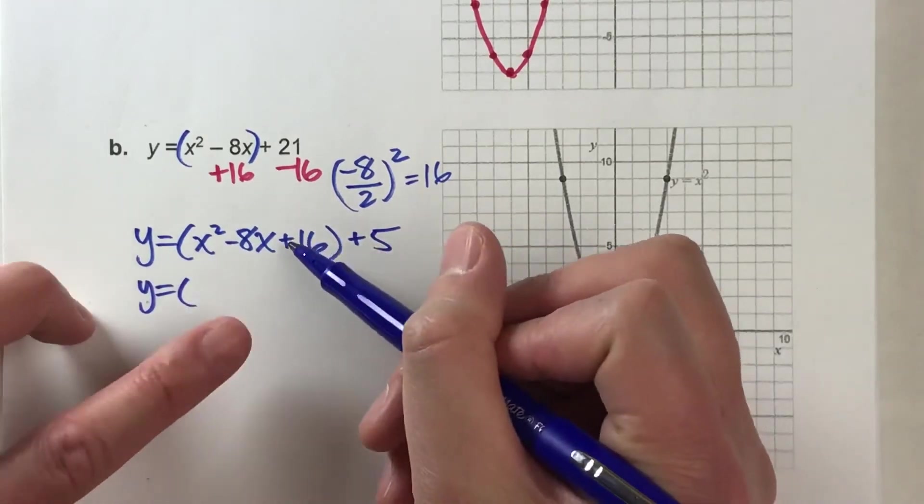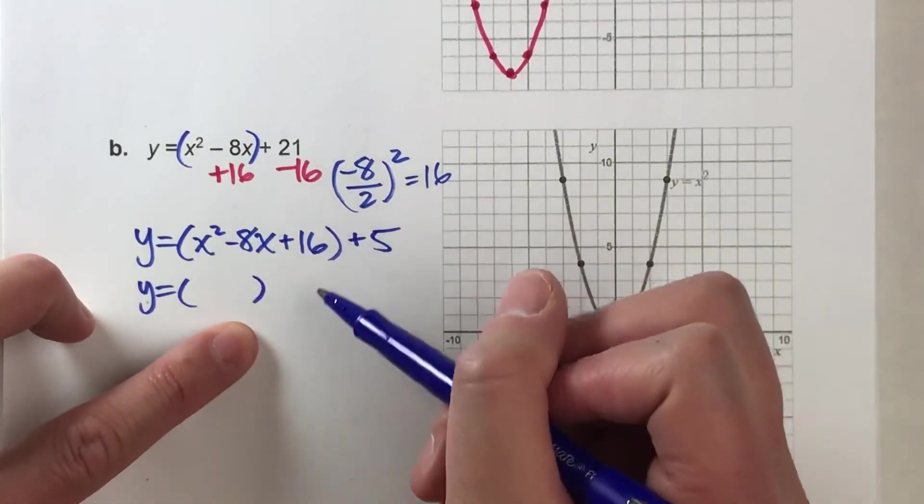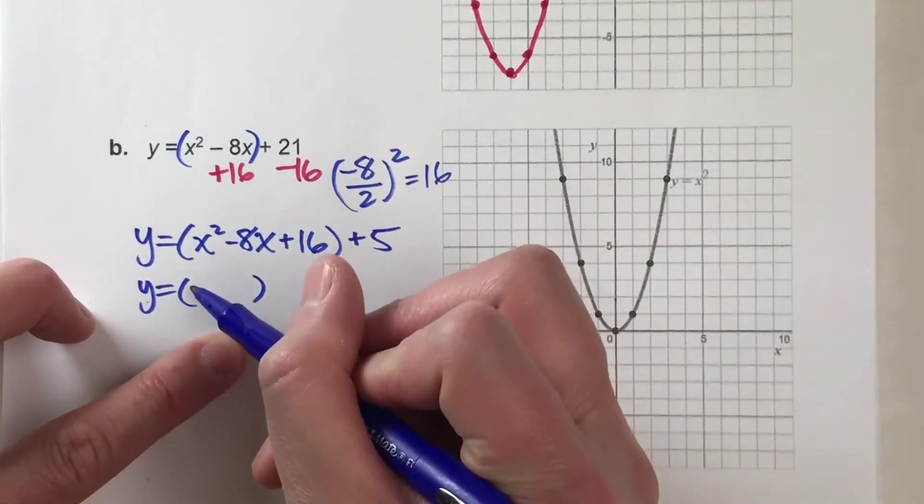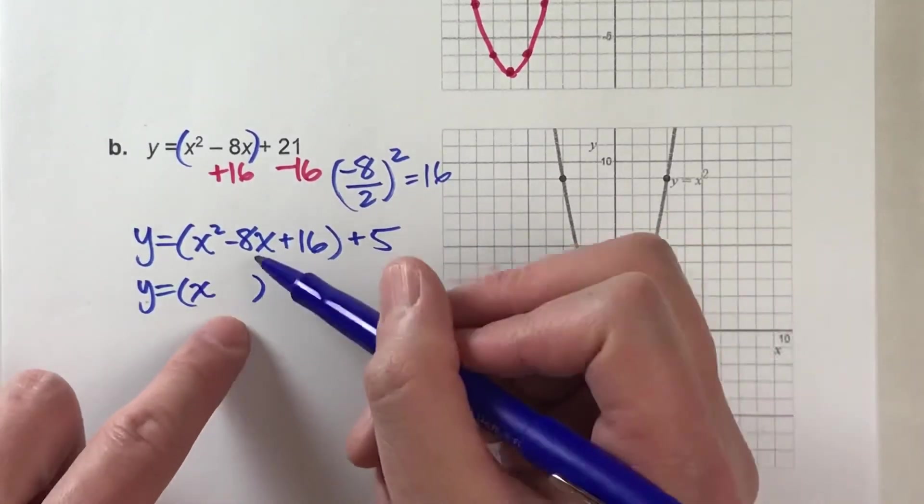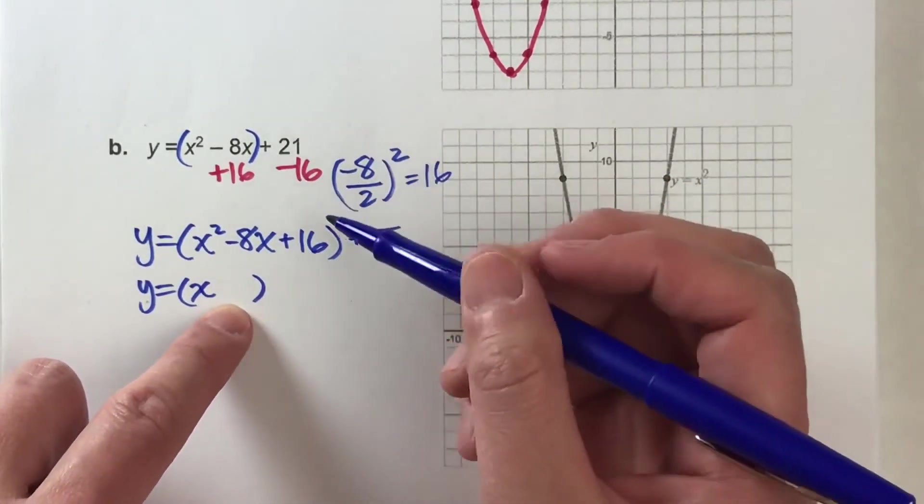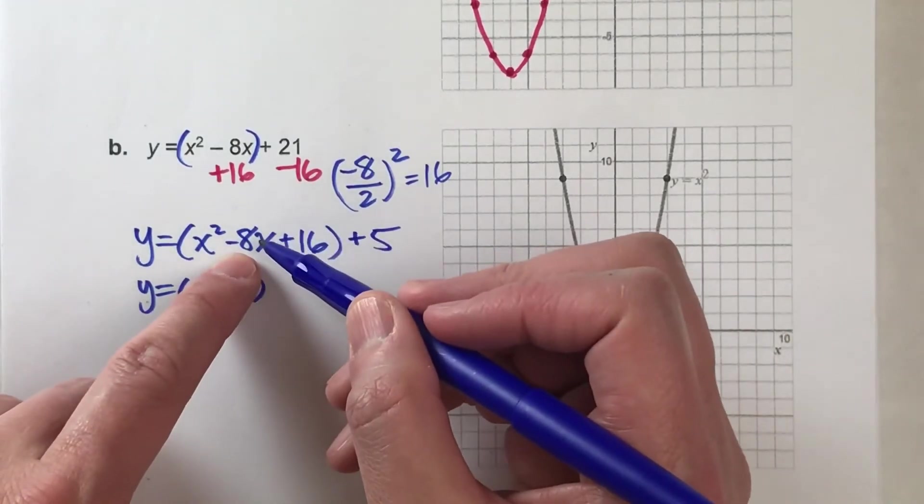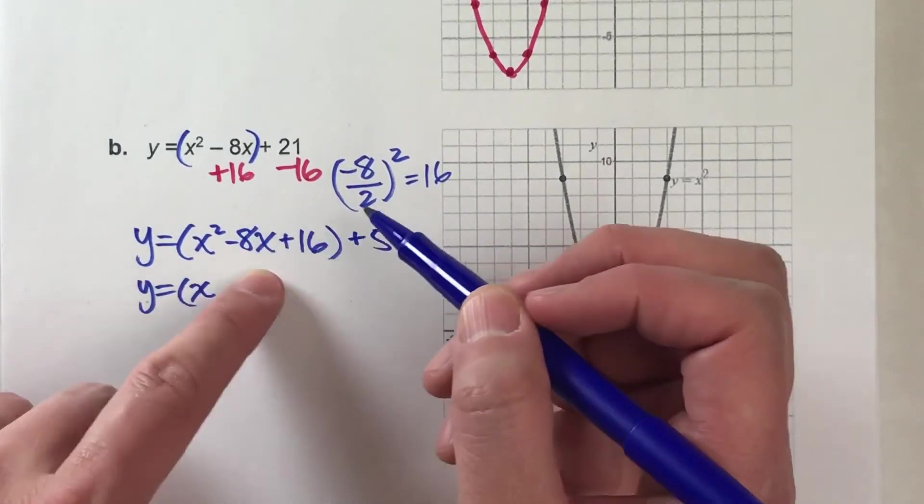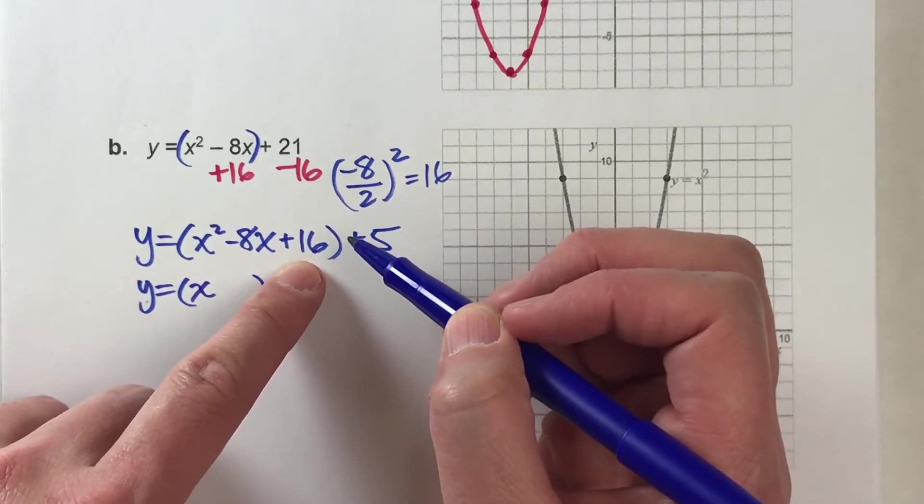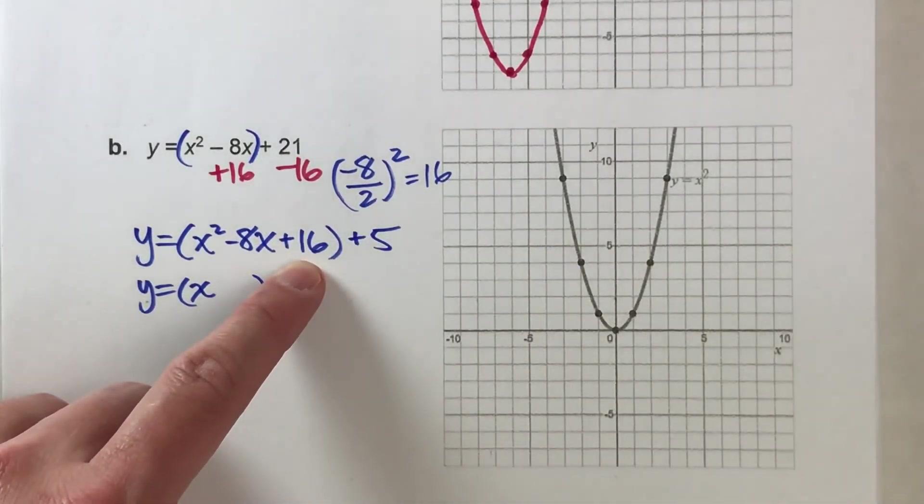Now, let's write this as the perfect square. We know we're going to have an x there. Now, for the other term, what we're going to do is either divide this by 2 or square root this. Negative 8 divided by 2 is negative 4. The square root of 16 is 4. Or, if you really think about it, the square root of 16 could also be negative 4.